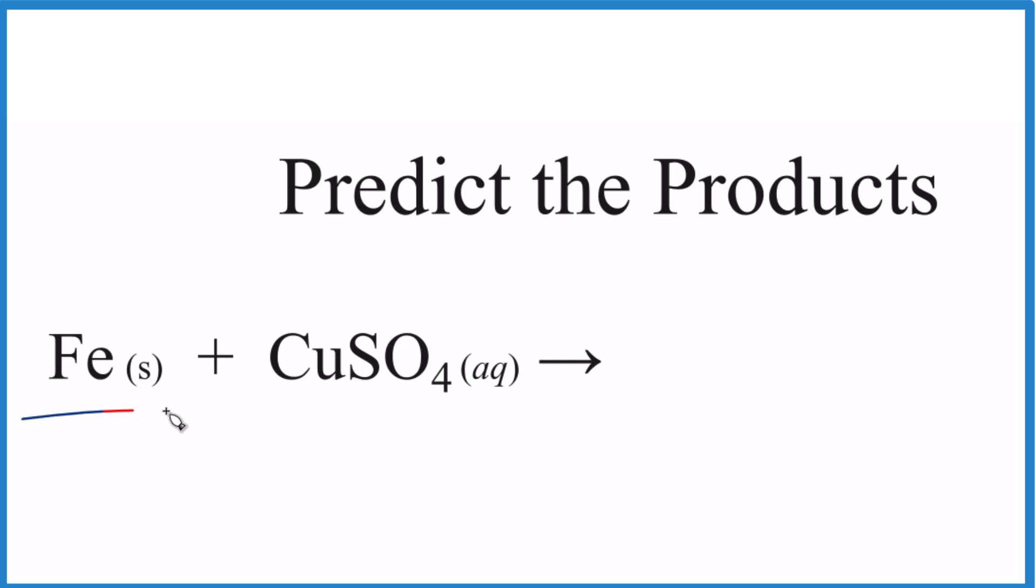Here we have a metal by itself and then an ionic compound, a metal and some non-metals. So it looks like this is going to be single displacement, especially with a metal by itself here. You're thinking single displacement.